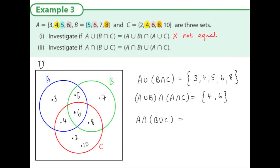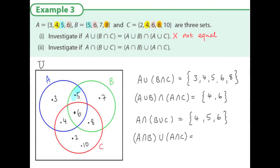Second one: what is the value of A intersection (B union C)? I color A, then B union C in blue — anything in B or C. Their intersection is the overlap, colored green: four, five, and six in any order. Is that the same as (A intersection B) union (A intersection C)? A intersection B gives five and six; I shade A intersection C in yellow. The union means anything in either region — again four, five, and six. So yes, this time it is true that both of these are equal.